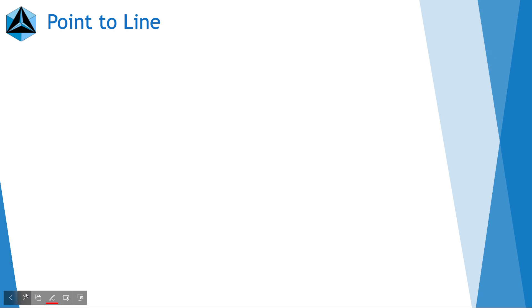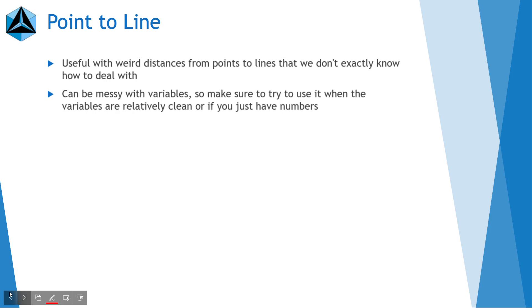The next one is point to line theorem. It's useful for finding the distances from points to lines, as the name suggests. And if you're given a bunch of distances from points to lines in a problem and you don't exactly know how to deal with them, it usually indicates for you to use point to line. And if you're using it with variables, then it is pretty messy, so you need to make sure to be careful and try to avoid making equations that are too bashy. And it's derived from finding the equation of a perpendicular line through the point and Pythagorean theorem.